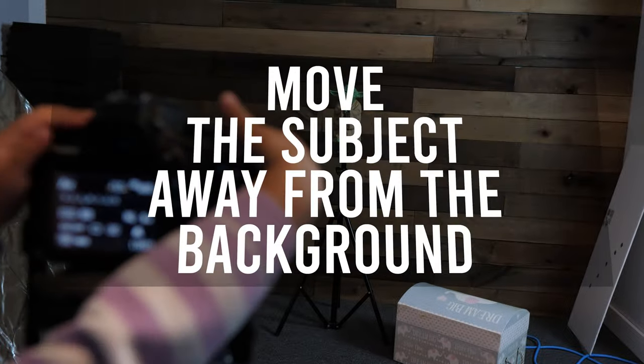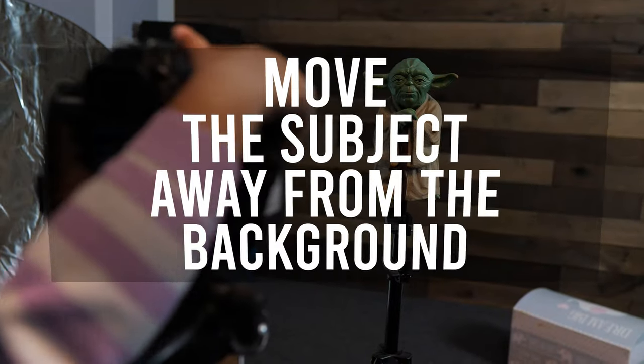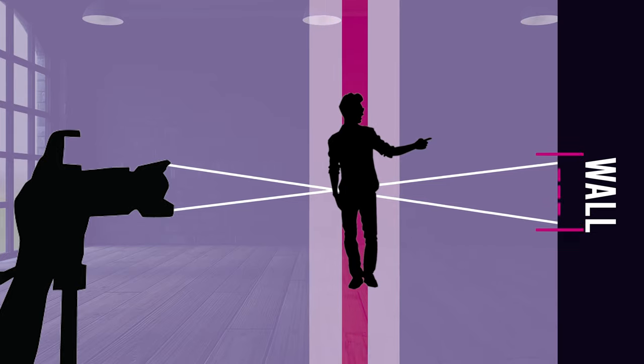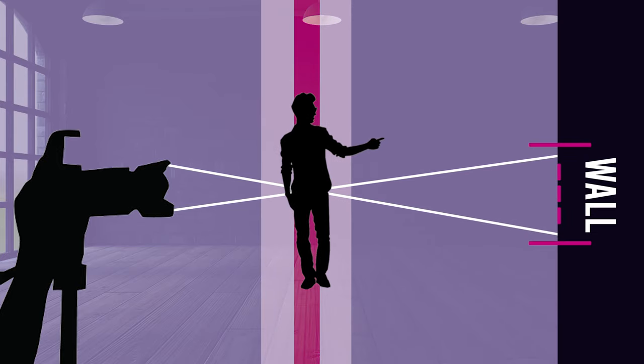Now, as you probably noticed, when you move the camera closer to the subject, you also change the angle of view from a wide shot to more of a narrow or close-up shot. So is there a way to get a blurrier background but also keep the same angle of view? Yes, that's where the second method comes in, which is to increase the distance between the subject and the background. When you do this, it doesn't actually change your depth of field, but it allows the light rays to separate more, and the further they are apart, the more blur you get.